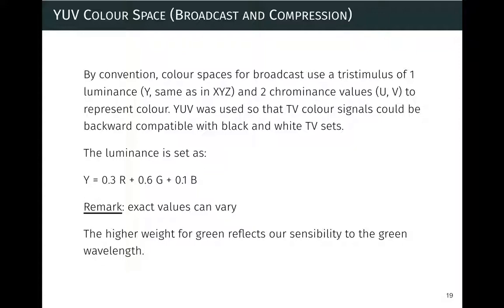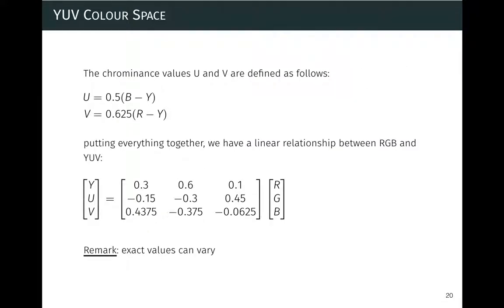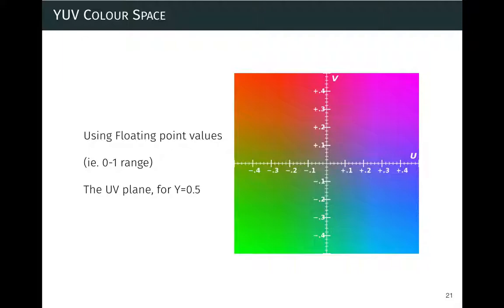This makes evolutionary sense: plants absorb red and blue and reflect a lot of green, so we evolved high sensitivity to green. In broadcasting, they wanted something more useful than RGB — a color space where one dimension captures brightness and the others capture color. This led to YUV, which is a linear transformation of RGB using a specific matrix (which varies slightly by standard). Y is the luminance, and U and V are the chrominance coordinates expressing the color of each pixel.